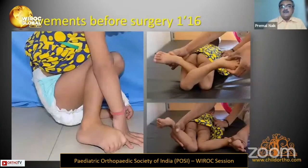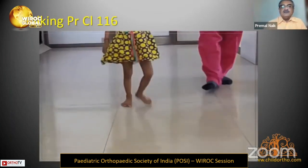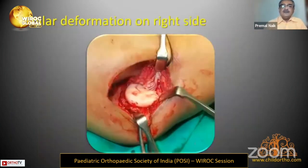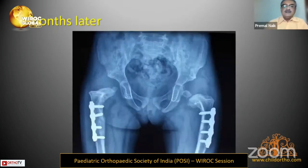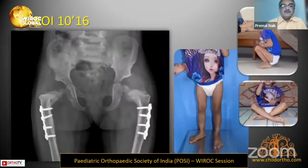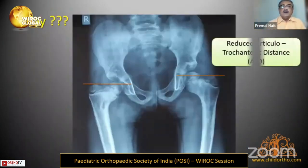Six months later she came for the second side with reasonably good movements on the operated side, but still walking with a limp. The right capital femoral epiphysis was abnormal and flattened. She had a similar surgery — open reduction with significant shortening, without varus but with anti-rotation. Six months later the capital femoral epiphysis appeared on that side and the acetabulum started developing well. Implant removal was done about a year later.